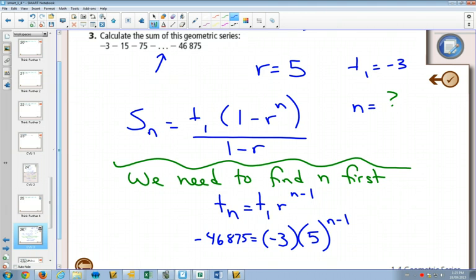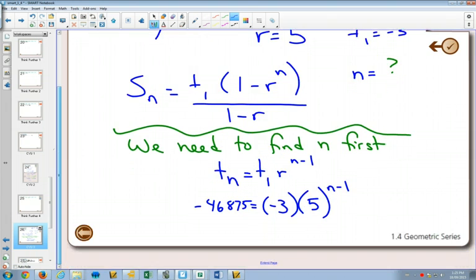So if we divide both sides by 3, we get 15,625 equals 5 to the n minus 1. And then do we remember what we did from here? We did one of these questions in 1.3. What did we do for the next step?